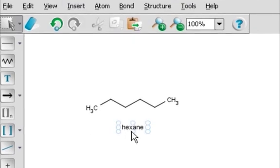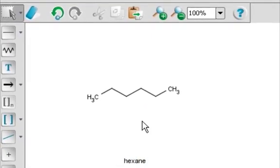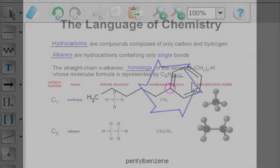And if we were to modify the structure of hexane, such as by adding a benzene ring to one of the methyl groups, we could see that addition of this benzene ring immediately changes the name of this compound to pentylbenzene.